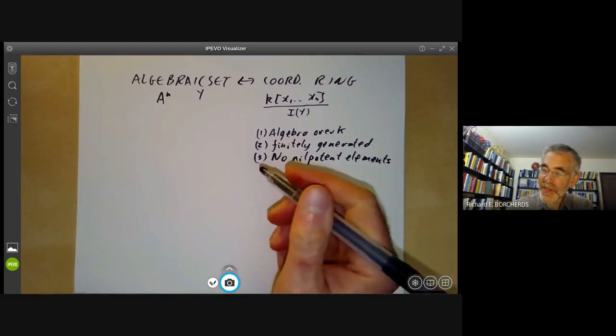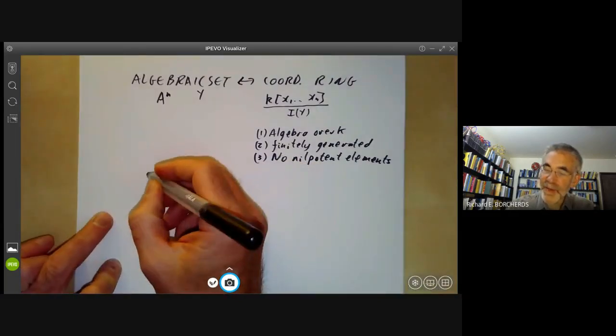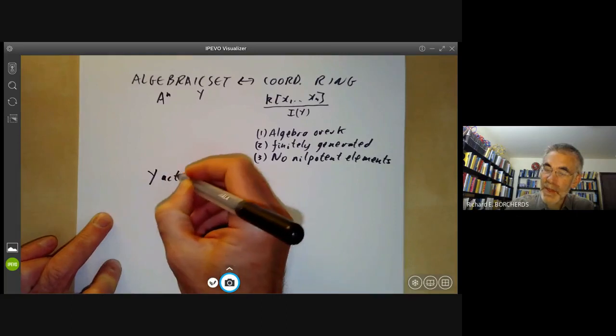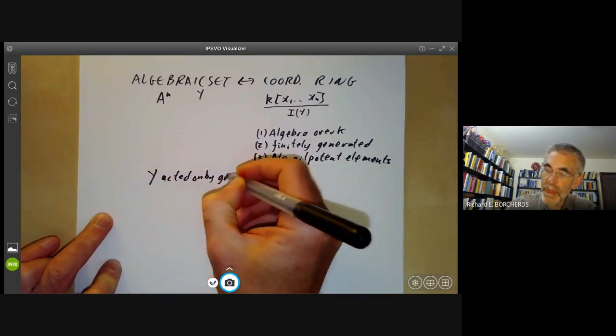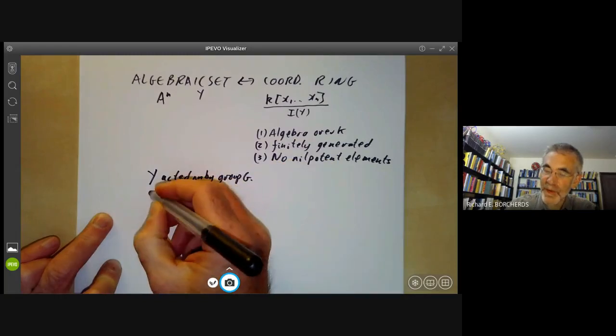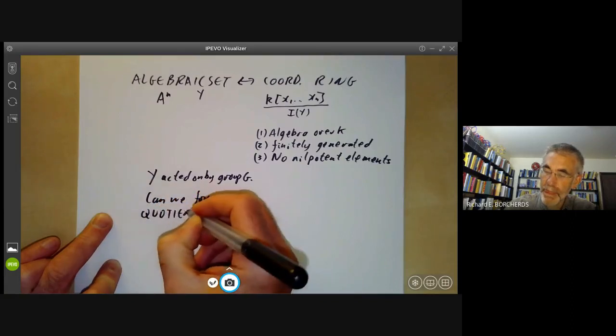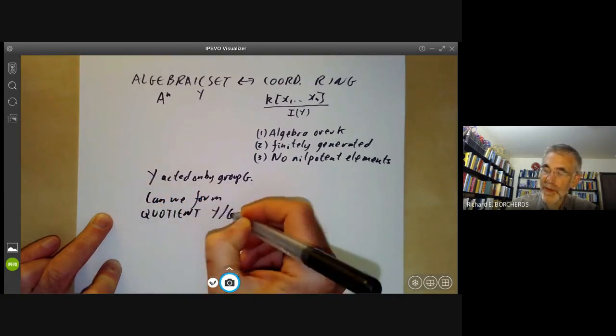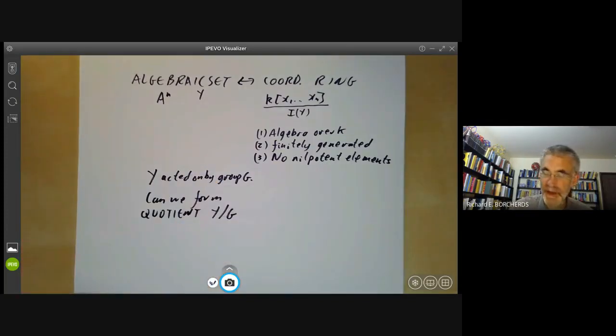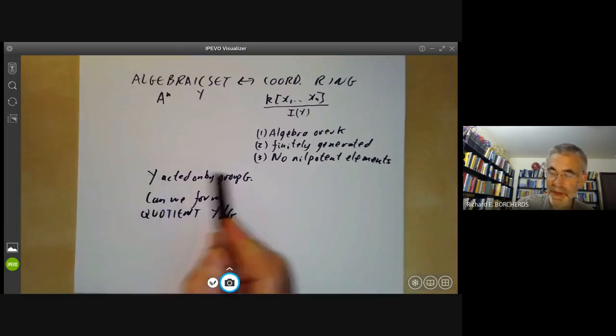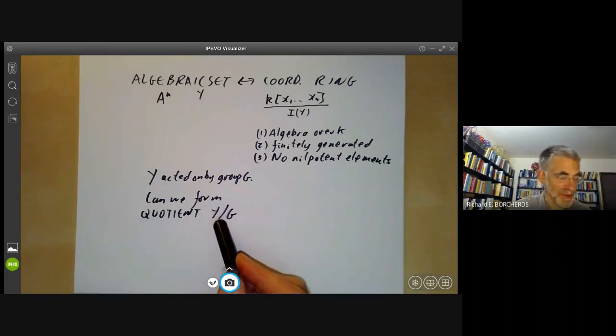Now we have an application of this. Suppose we have an algebraic set Y acted on by a group G, and the question is: can we form the quotient Y/G where we identify points in Y if they are equivalent under G? Actually, this doesn't really work—you can't form a quotient by identifying points of Y under elements of G as we'll see a little bit later in some of the examples—but we would still like to form something that we can count as being a quotient.